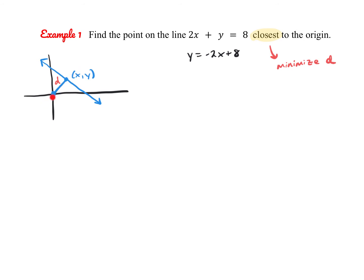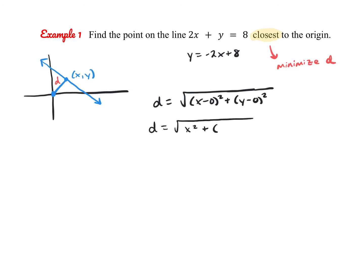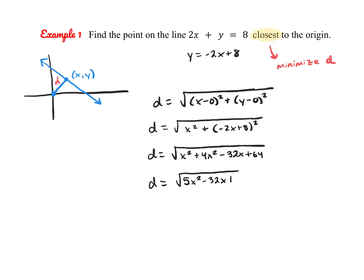We know the distance between two points is given by the distance formula: d = √((x₂ - x₁)² + (y₂ - y₁)²). We actually have three variables here, but we want to keep d since that's what we're optimizing. We can substitute y = -2x + 8, giving us a two-variable equation. Simplifying, we get d = √(5x² - 32x + 64).